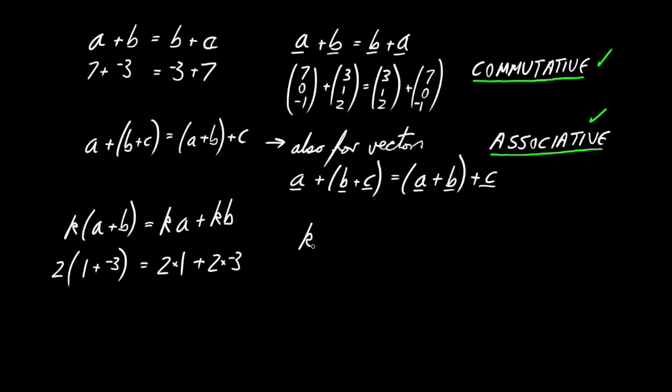So how about for vectors? Is it true that some scale factor k times the sum vector a plus vector b, a plus b, and let's stress that this scale factor is just a pure number? Then, yes indeed, it's going to be just k times a plus k times b.